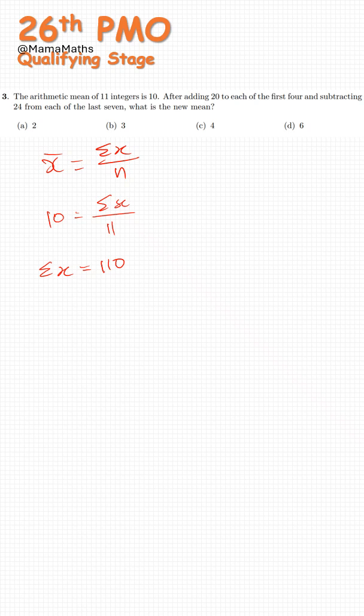Now, what will be the new formula for this one? So we have sum of x, that is the 11 terms. Then we added 20 four times and then subtracted 24 seven times. All over, how many? It's still 11.